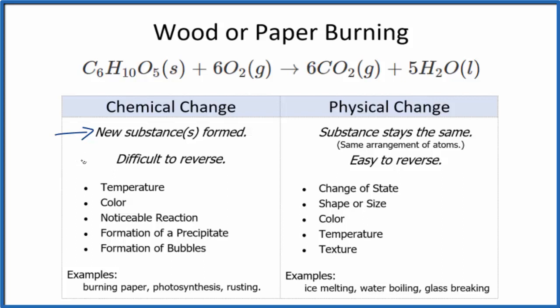it's very difficult to reverse. You can't easily change the products of the chemical reaction back into wood. You could, over time, have a tree grow through a set of pretty complex chemical reactions to make wood